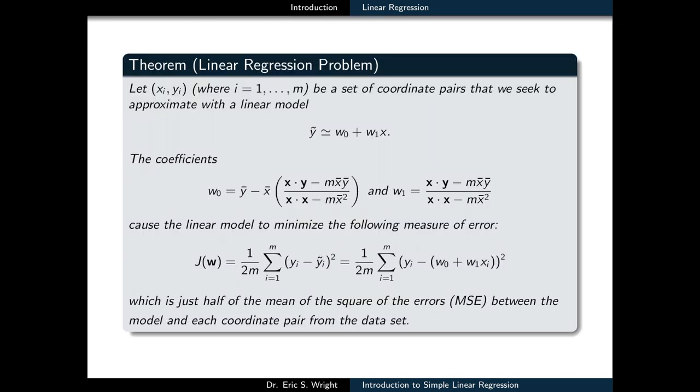So here's what the linear regression theorem states. Let x sub i and y sub i be a set of m-coordinate pairs that we seek to approximate with a linear model: y tilde is approximately equal to w0 plus w1 times x. The bias and weight coefficients w0 and w1 that appear in this model can be computed with the formulas that are now depicted on the screen.